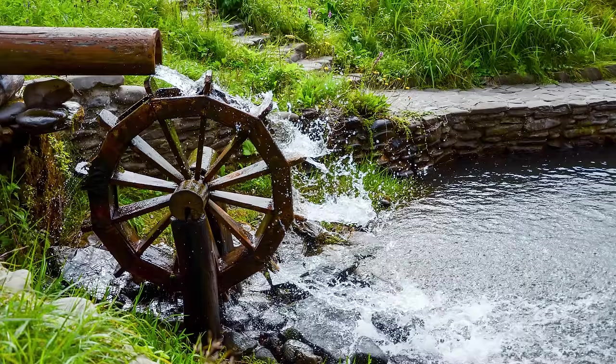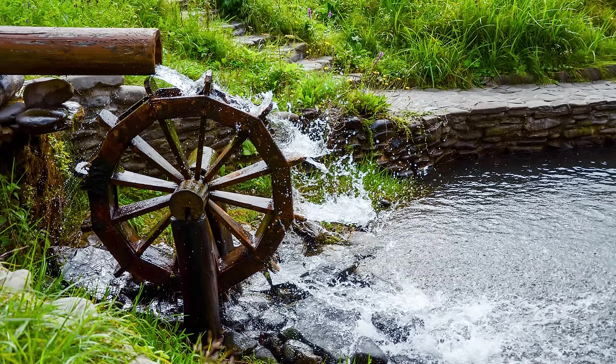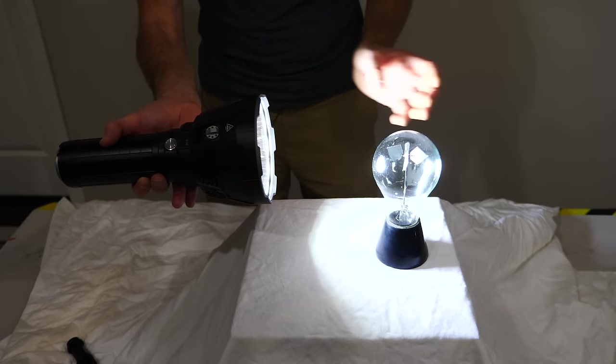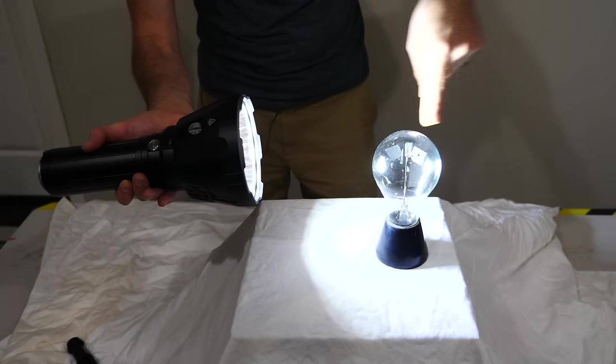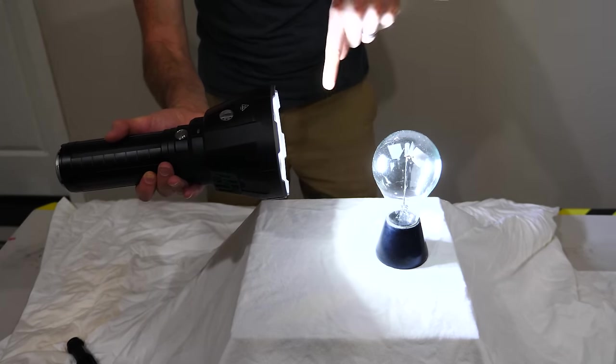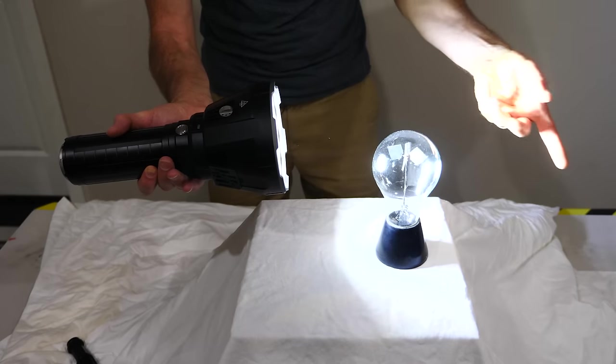So when you pour water on a water wheel, it causes it to start spinning due to the pressure of the water hitting the wheel. So he used that same logic with light. He said the pressure from the light is hitting the vanes causing it to spin. So it hits the vanes in there and pushes it around in a circle just like water on a water wheel.